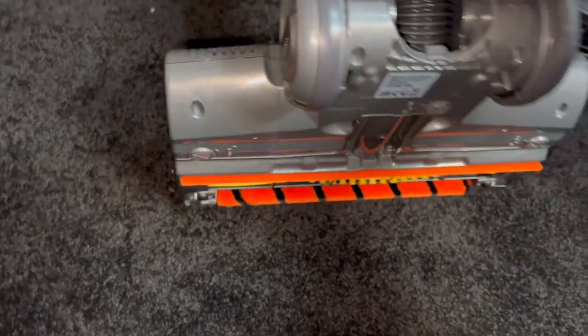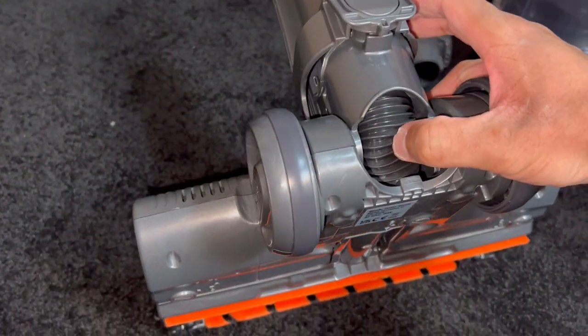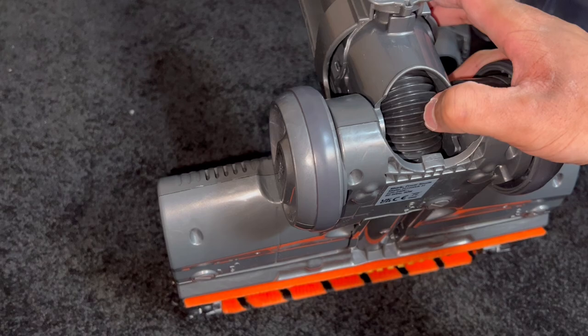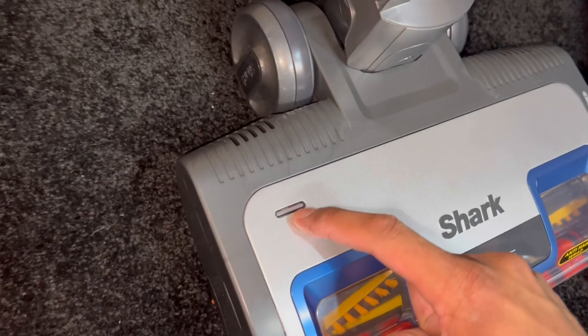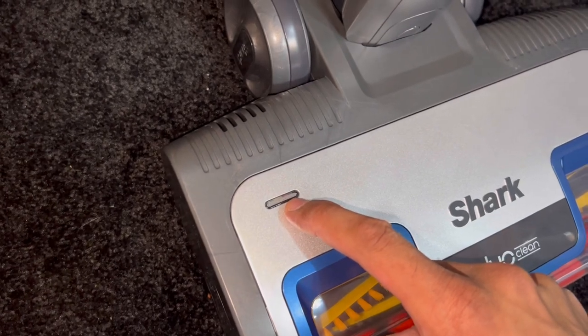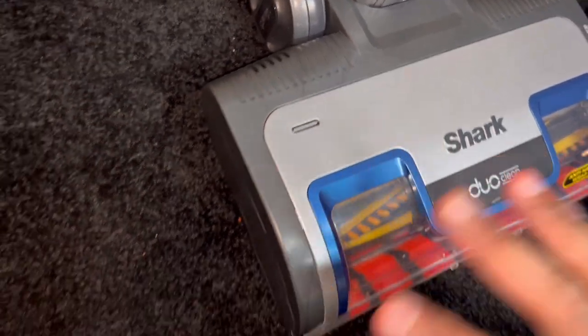What I like about the newer Sharks is these internal hoses. On the older Sharks, they split so commonly and rendered the whole floor head useless. There's your brush bar indicator light which lights up green when the machine's in use and the brush bar's spinning perfectly fine. But when that light goes red, it indicates there's an obstruction.